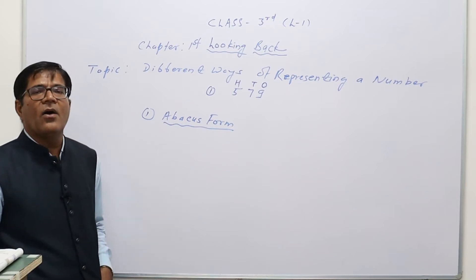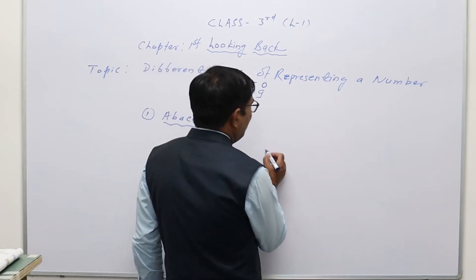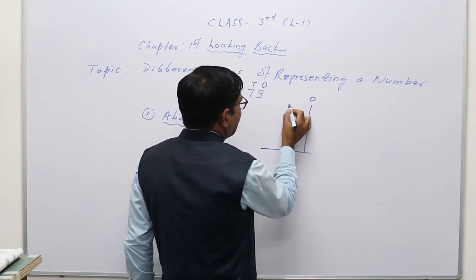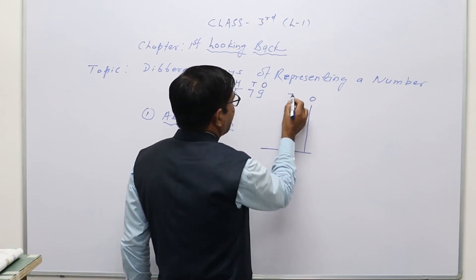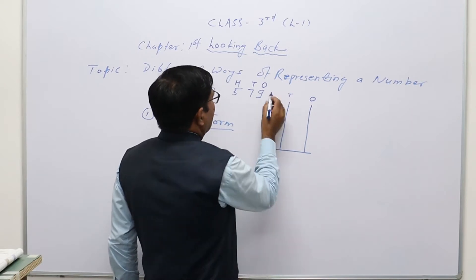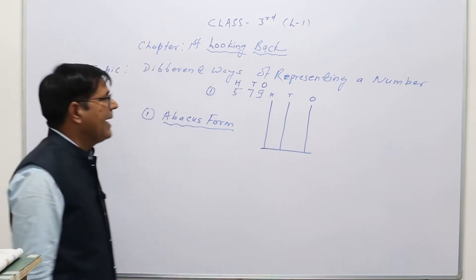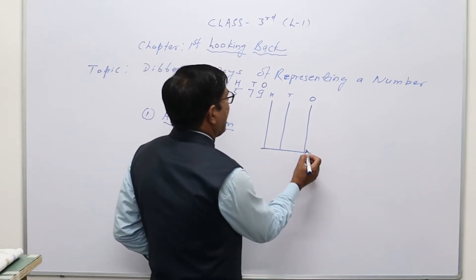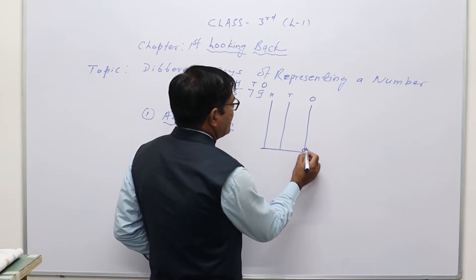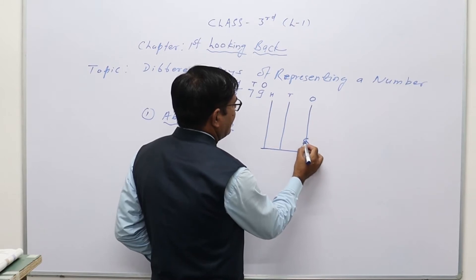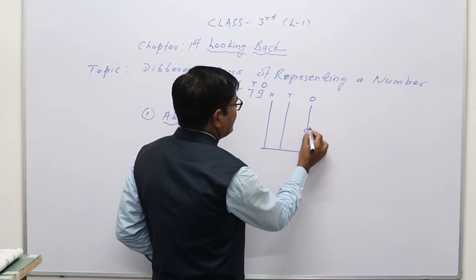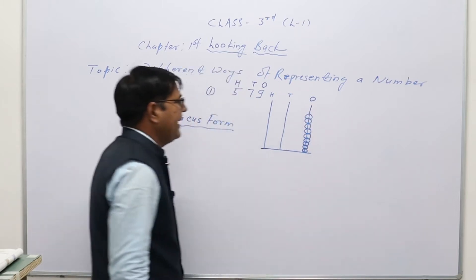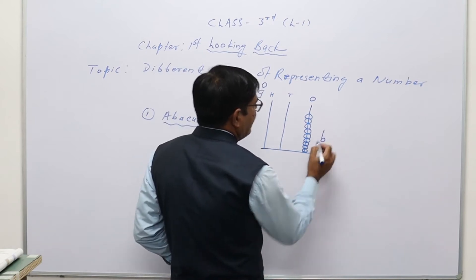In the abacus, we make strips for each place value. The first strip represents the ones digit, the second strip represents the tens digit, and the third strip represents the hundreds digit. In the given number 579, the ones digit is 9, so in the first strip we make nine beads: 1st, 2nd, 3rd, 4th, 5th, 6th, 7th, 8th, and 9th.